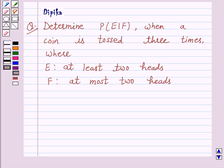Hello and welcome to the session. I am Deepika here. Let's discuss a question which says: determine probability of E given F when a coin is tossed three times, where E is the event at least two heads and F is the event at most two heads. So let's start the solution.